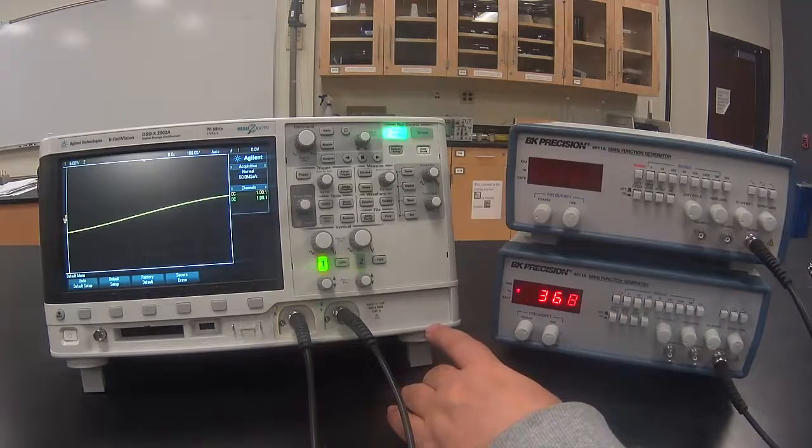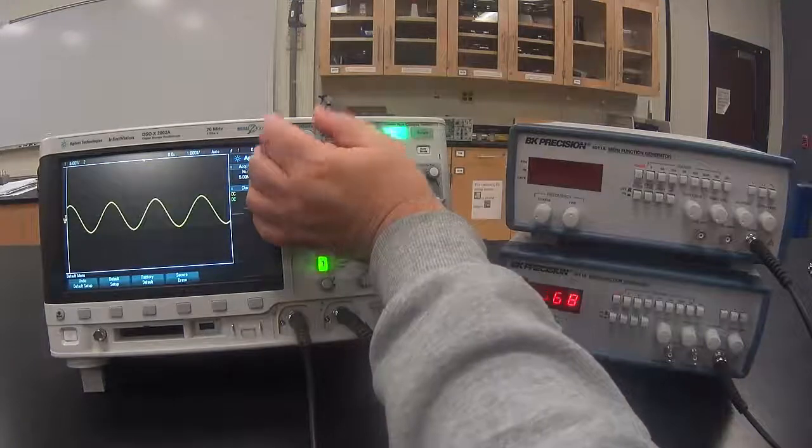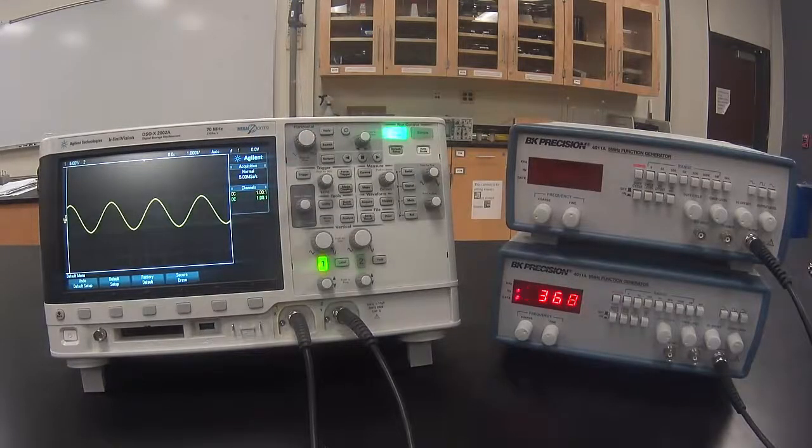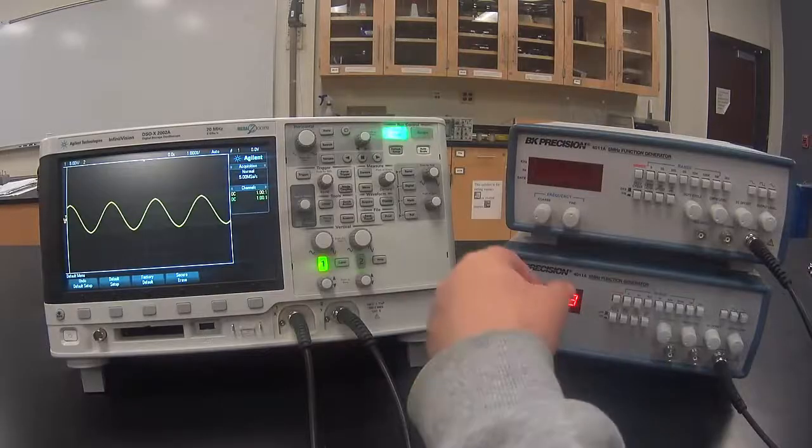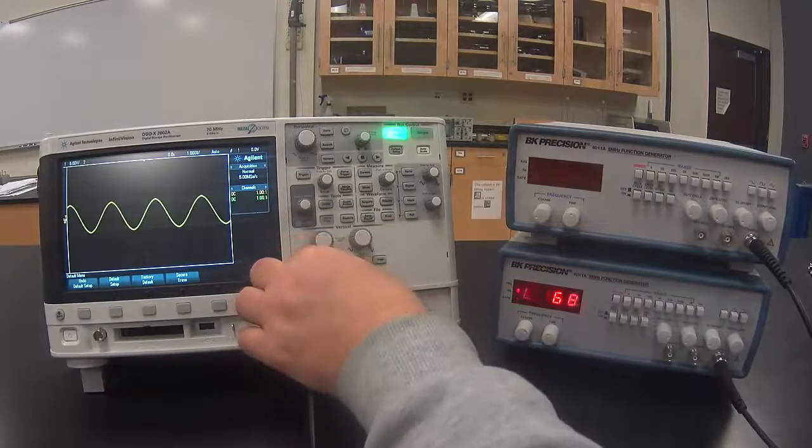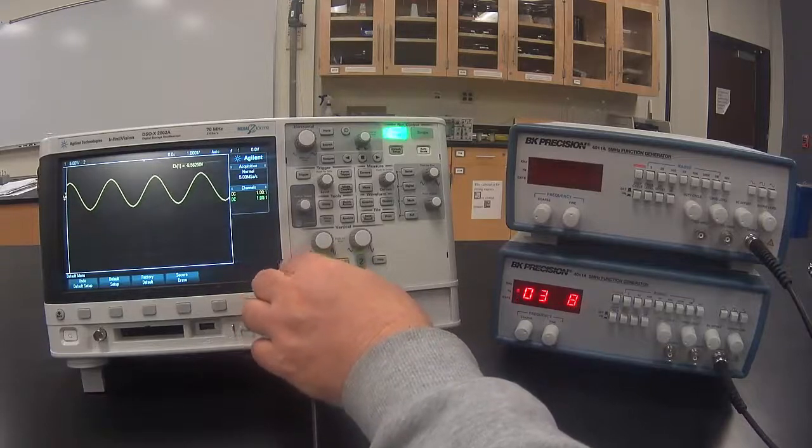Adjust the voltage and time settings until there are a few waves displayed on the screen and the displayed signal is less than half a screen in height. Using the ground adjust, move the signal to the upper half of the screen on the oscilloscope.